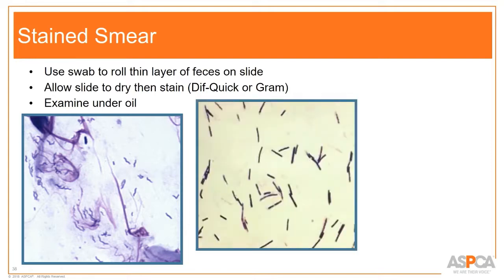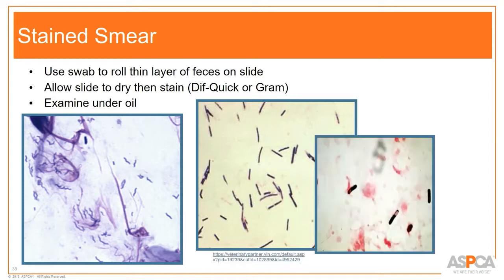Clostridium is sometimes called a safety pin shape because the spore at the top creates a lighter color in the rod. You can also get an idea if there's bacterial overgrowth from a stained smear. You definitely need somebody trained to know what they're looking for, but it doesn't take too long to learn. Make sure whoever is reading stained smears has proper training.